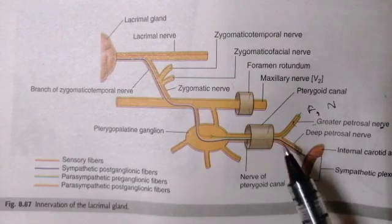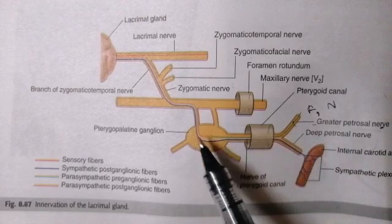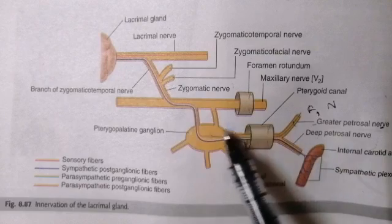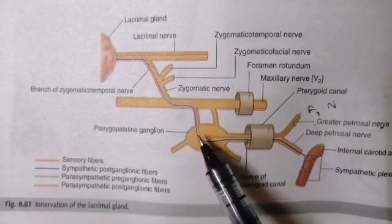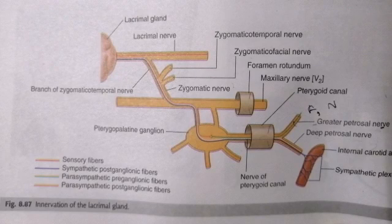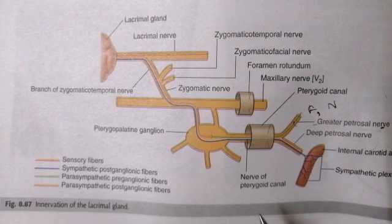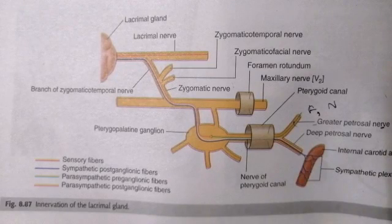The sympathetic innervation to the lacrimal gland comes from the internal carotid plexus via the deep petrosal nerve. The deep petrosal nerve travels along the pterygopalatine ganglion, joins the parasympathetic innervation, and ultimately supplies the lacrimal gland. So the gland receives sensory innervation from the trigeminal nerve, parasympathetic preganglionic and postganglionic fibers, and sympathetic fibers from the internal carotid plexus through the deep petrosal nerve.